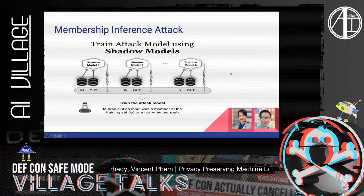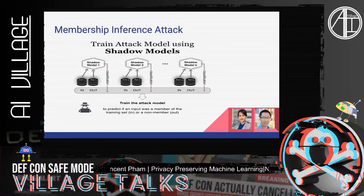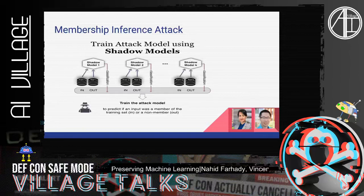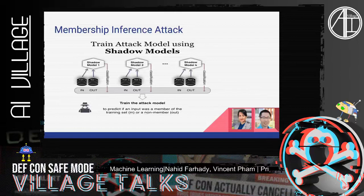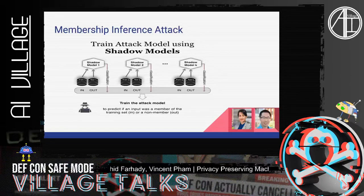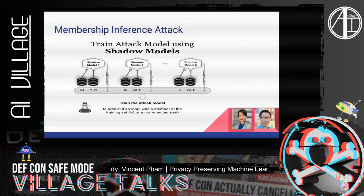We also have a membership inference attack, where an adversary can generate multiple shadow network models that resemble the production environment, produce probabilities from these models, create a new attack model to feed in these probabilities, and learn what observations are trained by the production model and what are not — identifying what are members and what are not members.